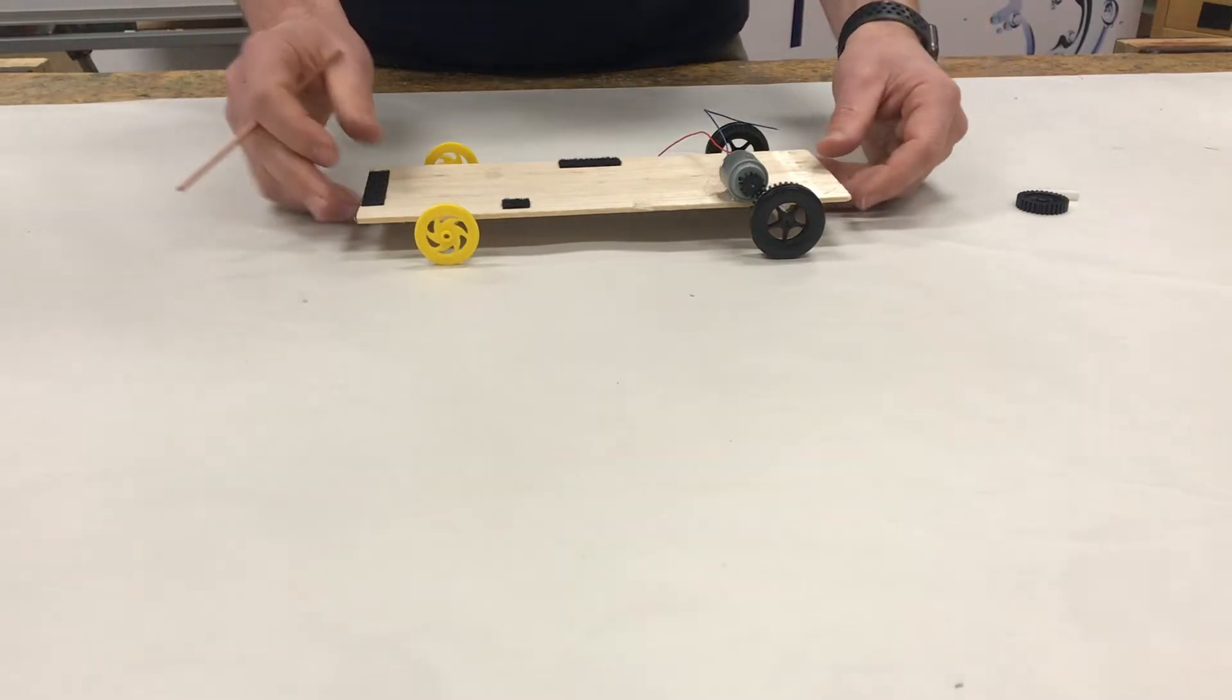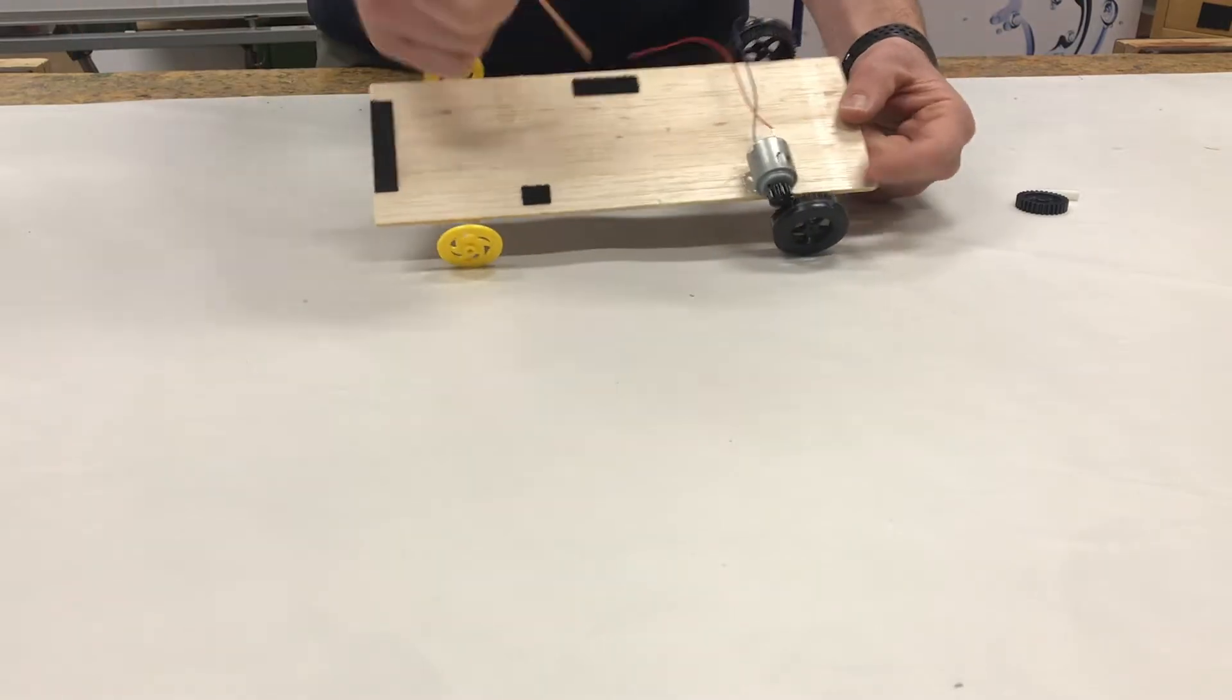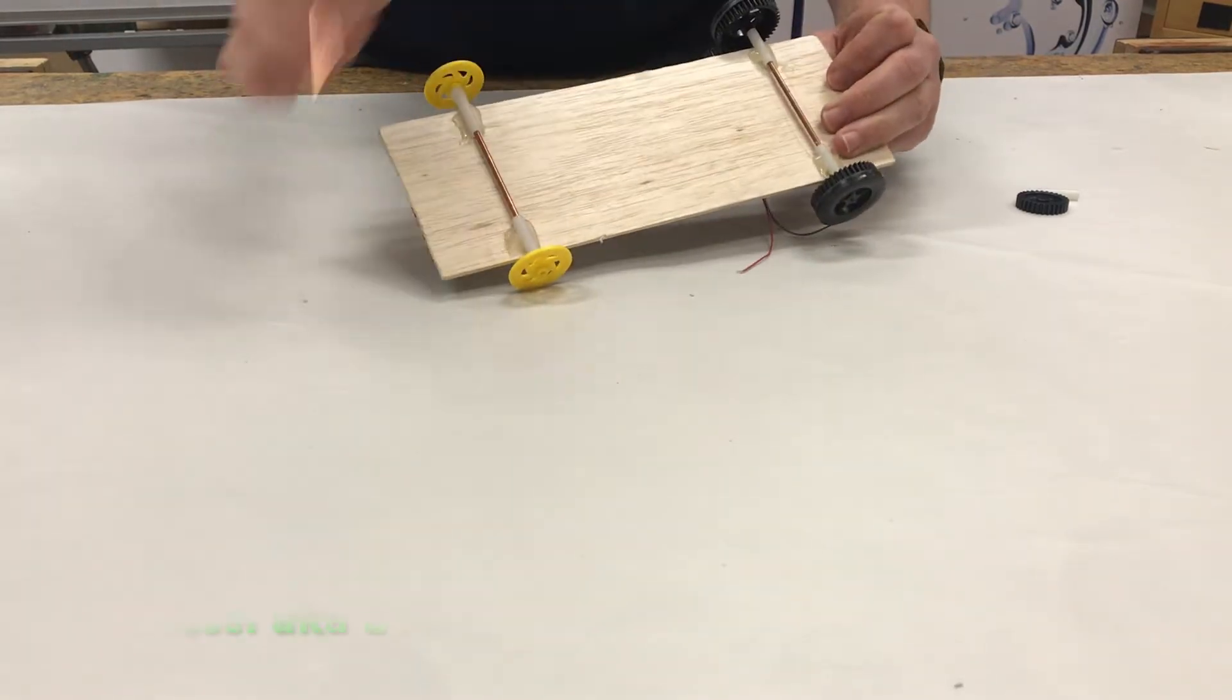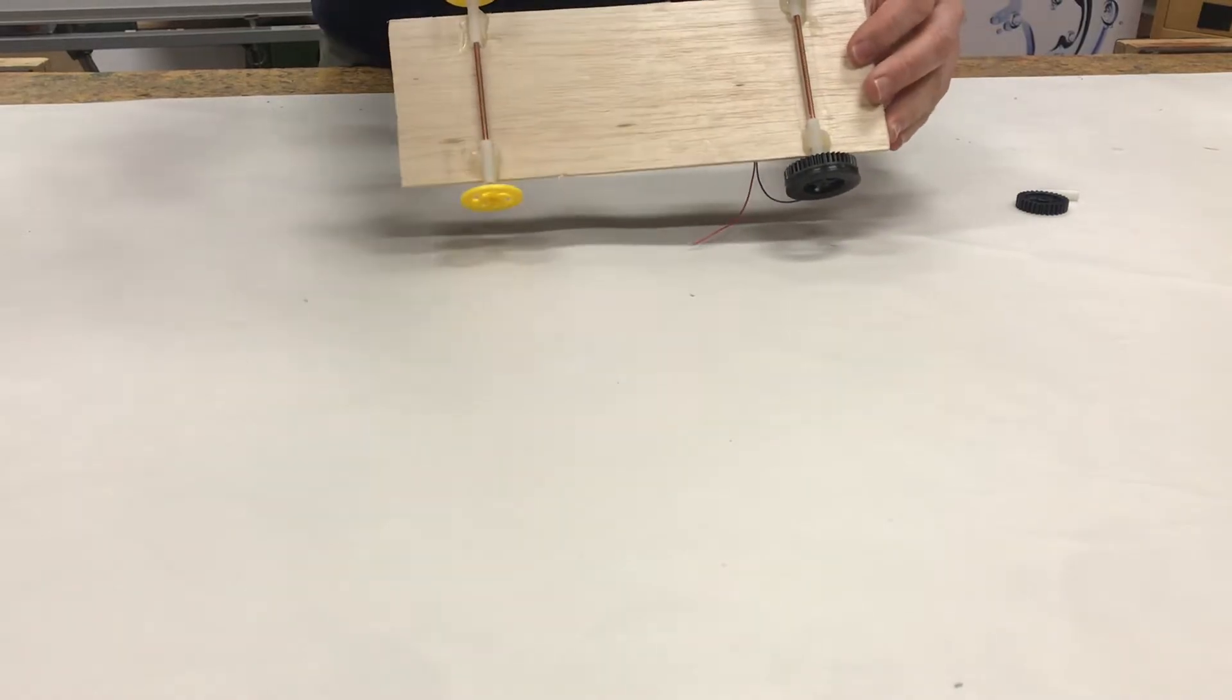Alright, so in this video we are going to go over the parts of the car. First thing, you've got this big board and that board is called the chassis. The chassis is where everything gets attached to.